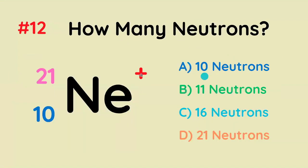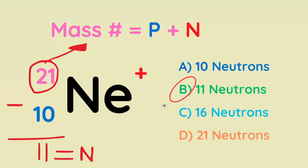How many neutrons does this isotope of neon have? 10, 11, 16, or 21? The correct answer is B — 11 neutrons — because this number is protons plus neutrons, whereas this number is protons. We just take the difference and we get 11.